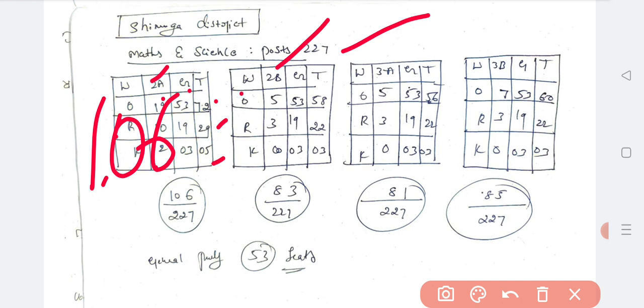2A category. 2B category. Others 5, General 53, Total 58. Rural 2B category, General 19, 22. Kannada medium is 0 plus 3. Totally 83 seats are reserved for 2B, Kannada medium, rural women.